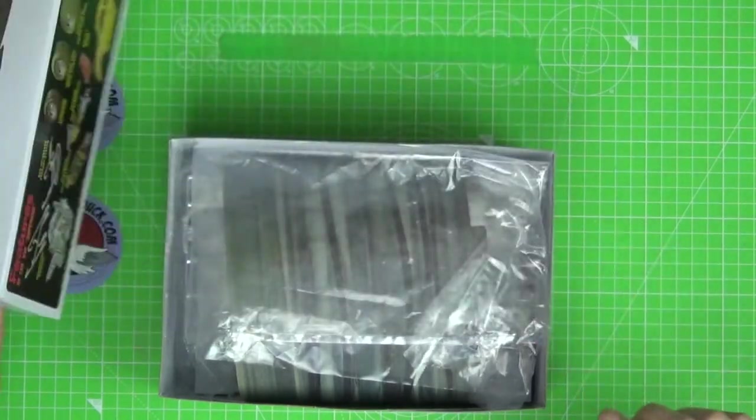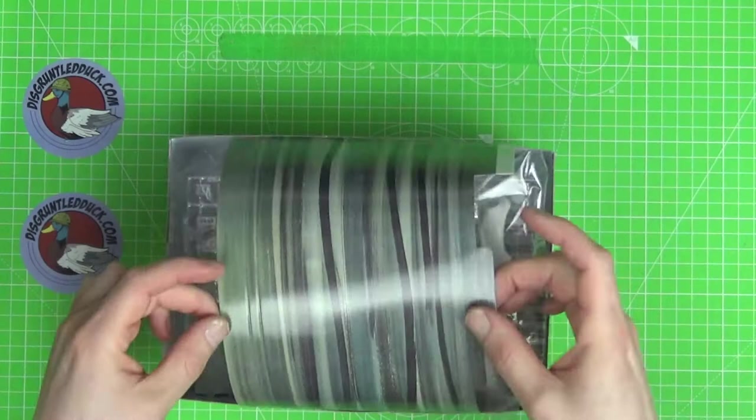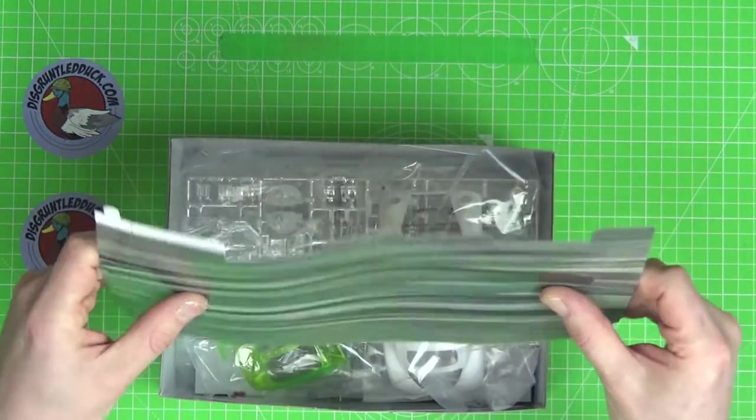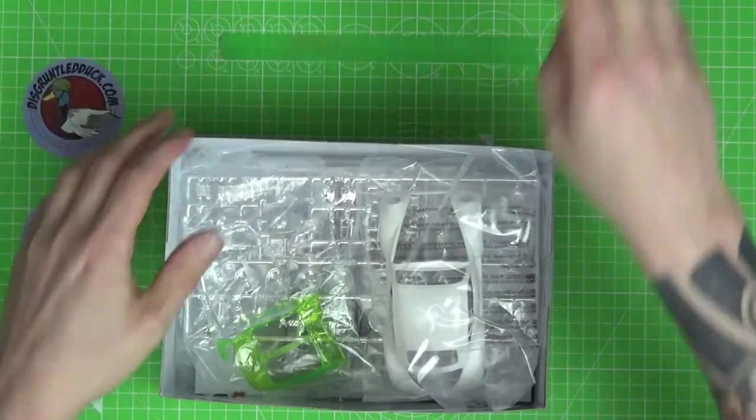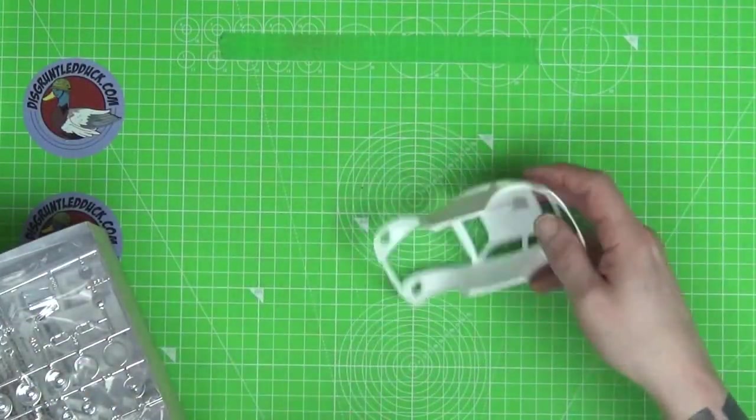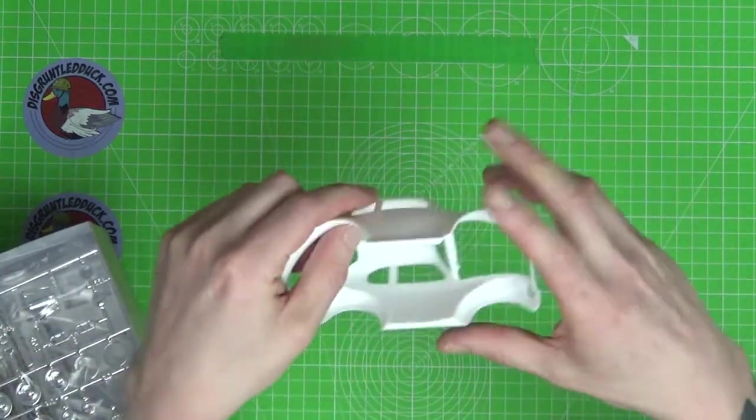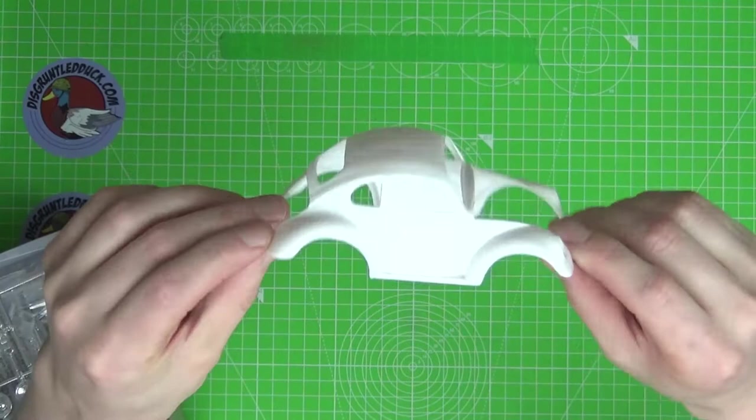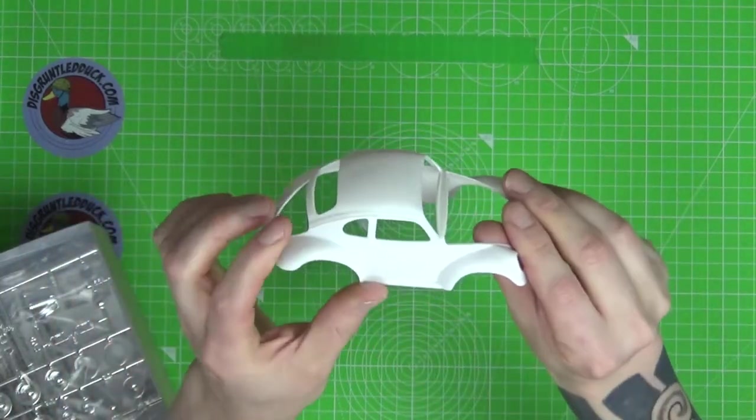It looks like quite a cool little model, also a shortened customized Beetle body so that should be good. Let's have a look inside - a bit of cardboard, I'm sure that has a purpose.